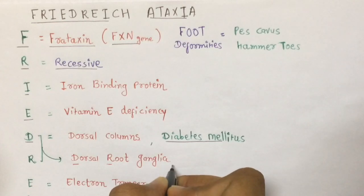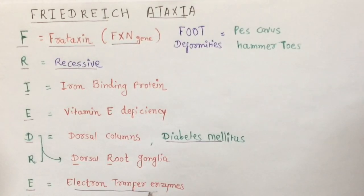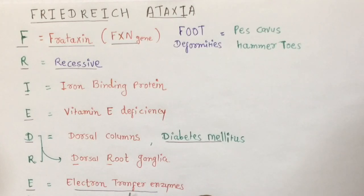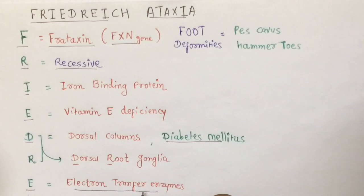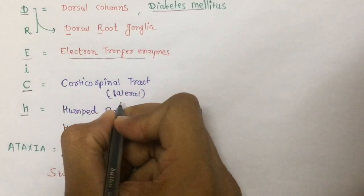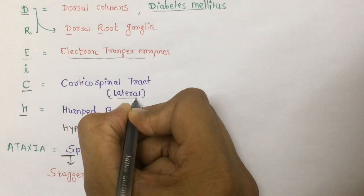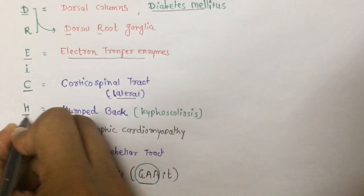R means dorsal root ganglia, which is responsible for loss of deep tendon reflexes. From E, you can remember electron transfer enzymes, which are essential for mitochondrial ATP production. In Friedreich's Ataxia, there is decreased expression of FXN, which leads to impaired mitochondrial functioning.